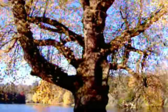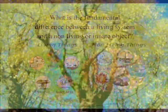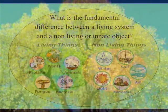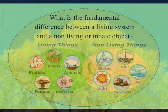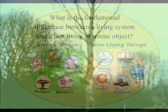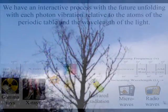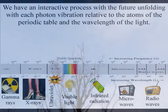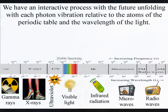To do this we need to know the difference between a living system and a non-living or innate object. To explain this we are going to look at the difference between a living tree and a dead tree. This is because plant life is simpler than animal life and interacts in a more direct way with the light of the sun and the atoms of the soil.